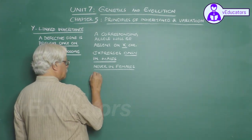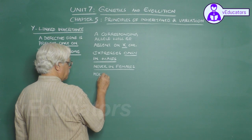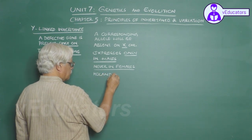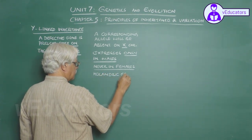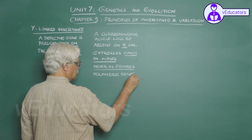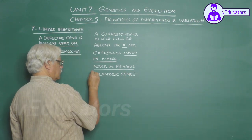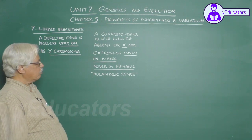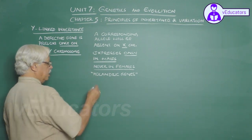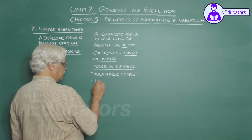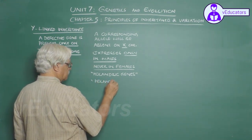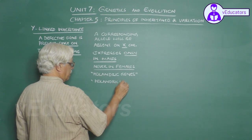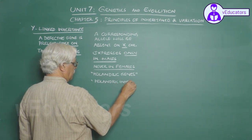So, such genes, because they are found only in males, such genes are called holandric genes, holandric genes, and the pattern of inheritance is known as holandric inheritance.